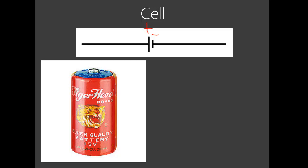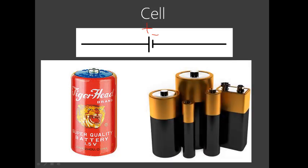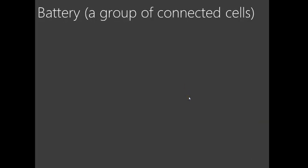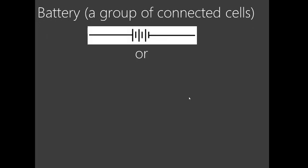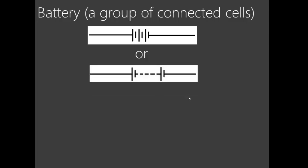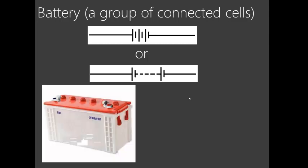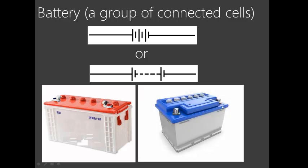People always mistake one battery for a cell. A cell is just one cell. Now you've seen many types. Remember, a group of cells connected together forms what we call a battery. So a battery is a group of connected cells. A battery is represented in this way — you have different cells connected, or you can show two cells with more implied in the middle. You've seen lead acid accumulators — that is one of the batteries. They come in different types, but they are all batteries.